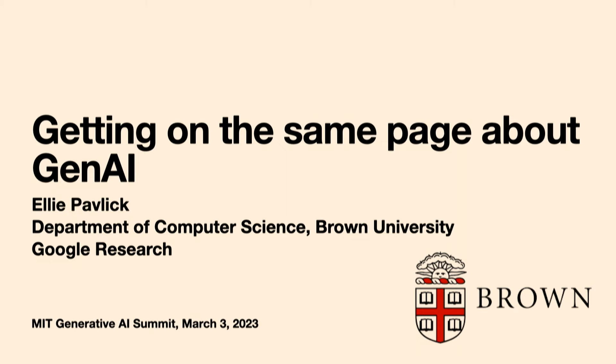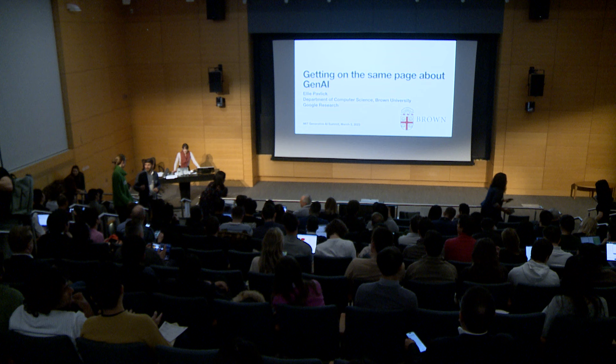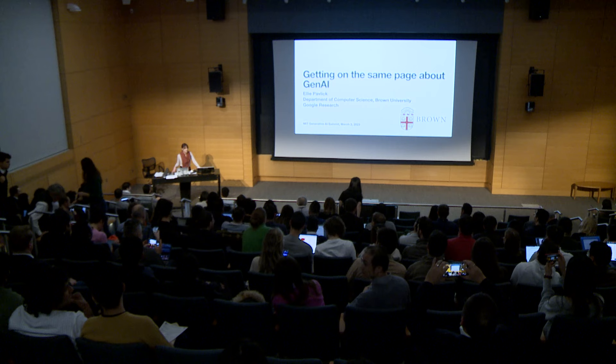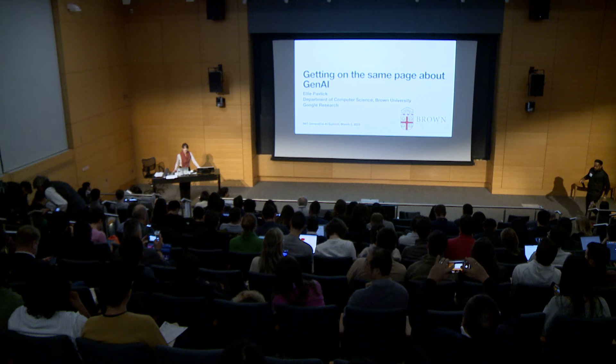I'm a professor of computer science at Brown University and also a research scientist at Google. I work on large language models and vision models, primarily trying to understand how they work under the hood — opening up the black box, getting a more precise understanding, and being able to control them better.